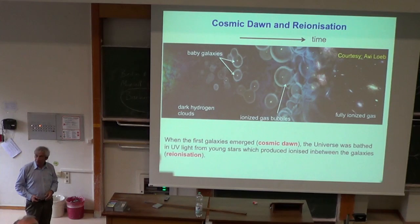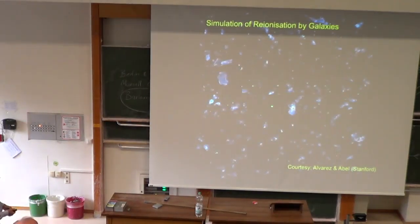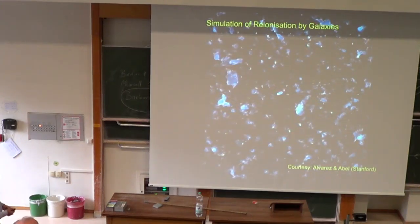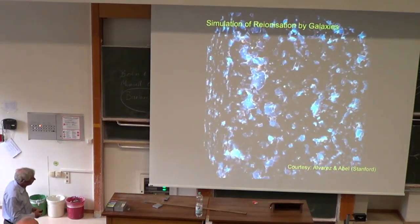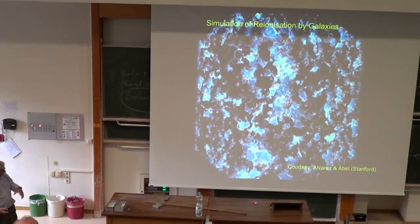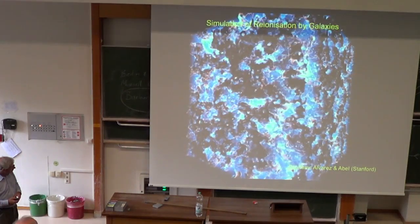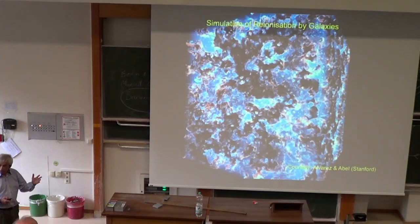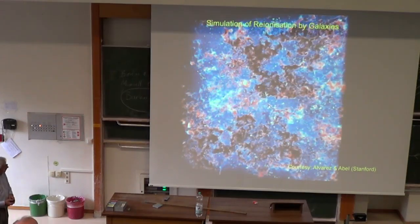We know very little observationally about this time — paradoxically we know more about the microwave background than we do about this period. Here's a simulation of the re-ionization process from the group at Stanford. The dark regions are neutral hydrogen clouds; the ionized bubbles are shown in blue. The expansion of the universe is removed for visualization — you see a cube of space — and eventually the ionized bubbles connect, like Swiss cheese, until the universe is completely ionized. This represents about 200 million years.